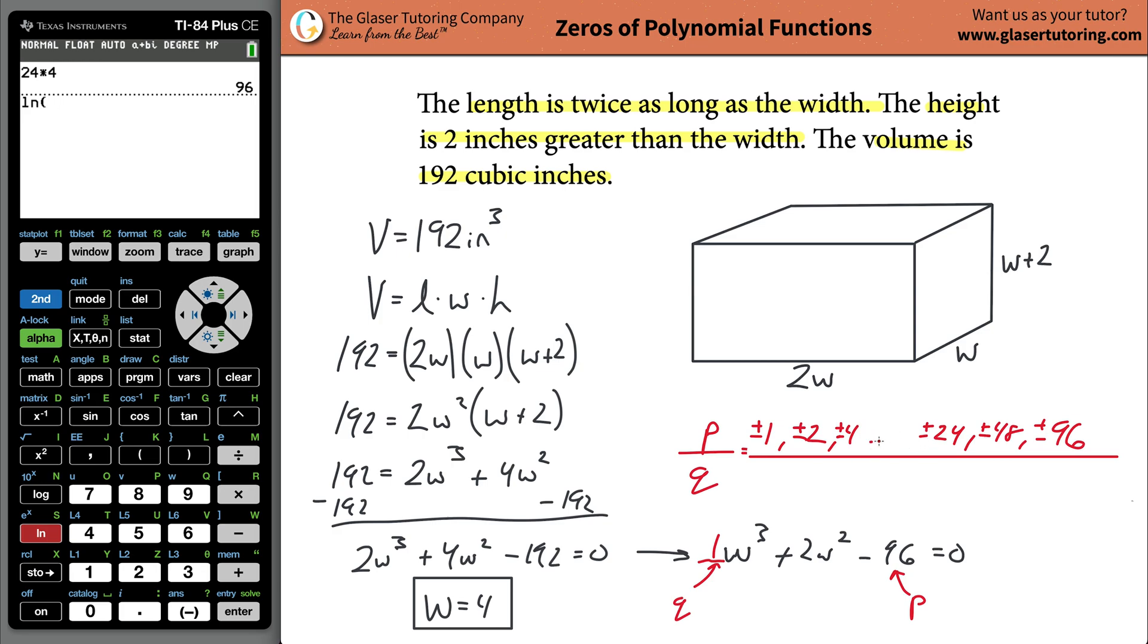You're going to take those factors, divide by the factors of the leading coefficient, which is just one. So you have plus and minus one. You have a list: plus and minus one, plus and minus two, plus and minus four, et cetera, all the way out to plus and minus 96. You're going to have a bunch of possibilities. The one I'm going to highlight is plus minus four over plus minus one. This could work out to be either positive four or negative four. We already know that the value should be four.